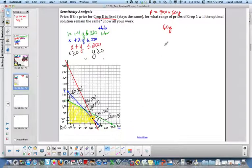What values for the price of crop 1 will maintain that as our optimal solution? So step 1 is we first plug c in, so p equals cx plus 60y. Step 2 is to get the slope.